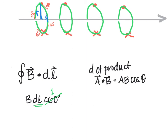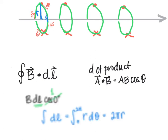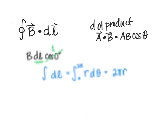The integral of dl as we go all the way around the loop can be written as the integral from 0 to 2 pi of r d-theta, because a little bit of dl is the arc length of the loop. That gives us 2 pi r as equivalent to the integral of dl. So the closed loop integral of B dot dl equals B times 2 pi r.